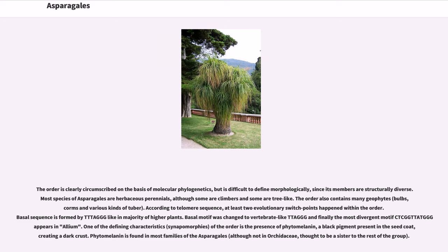According to telomere sequence, at least two evolutionary switch points occur within the order. The basal motif found in the majority of higher plants was changed to a vertebrate-type motif, and finally the most divergent motif appears in Allium. One of the defining characteristics, or synapomorphies, of the order is the presence of phytomelanin, a black pigment present in the seed coat, creating a dark crust.